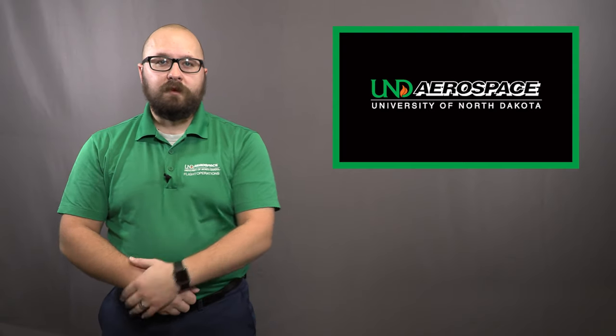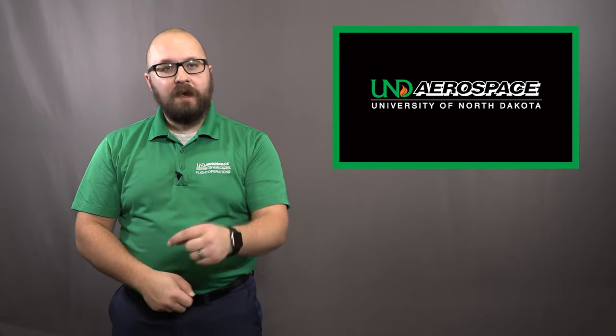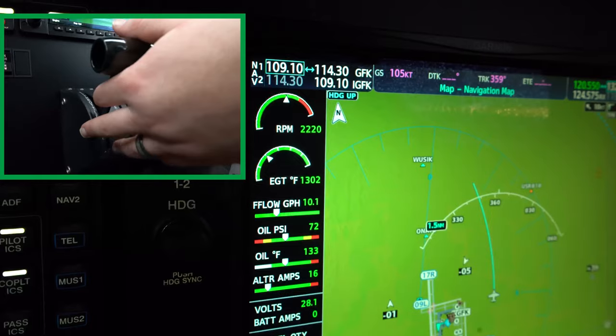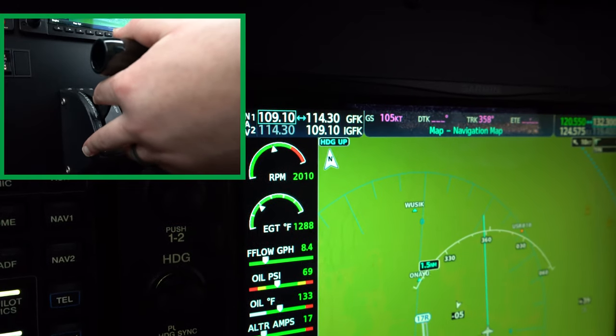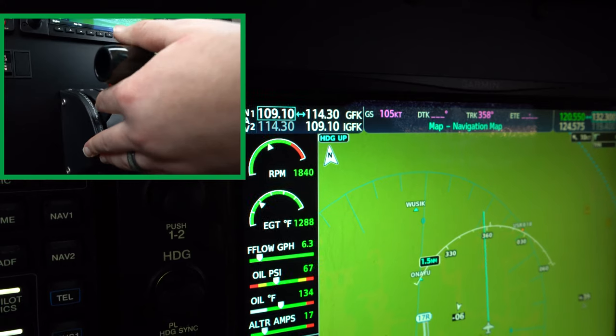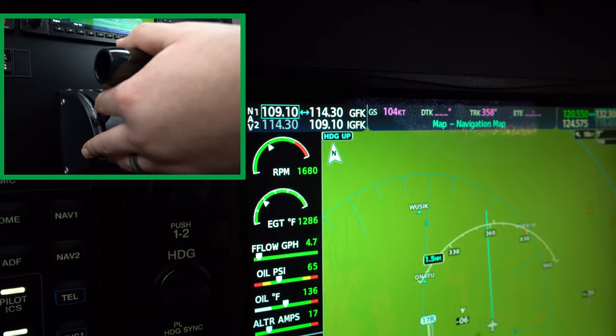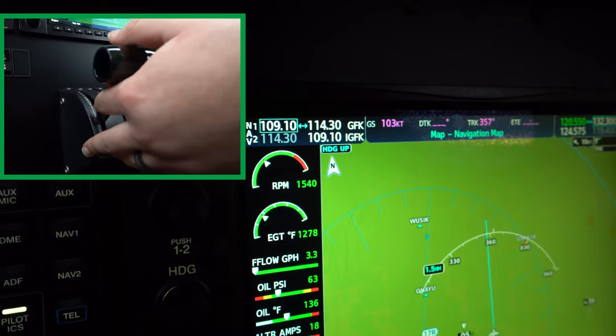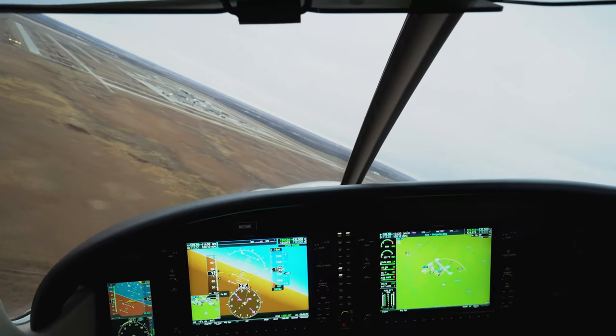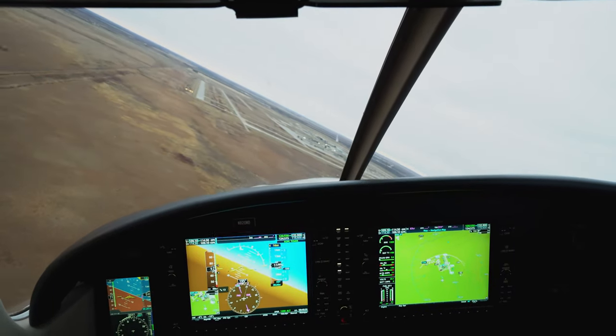Assuming that you are number one for the runway, it is important that you make a sizable power change abeam your aiming point. I personally teach my students to reduce power to roughly 1500 RPM and make small adjustments only if necessary until turning final. This forces you to keep the nose of the airplane down and make a continuous descent to land.